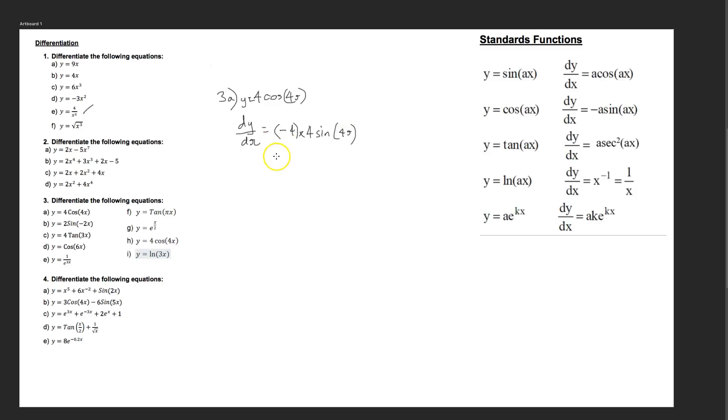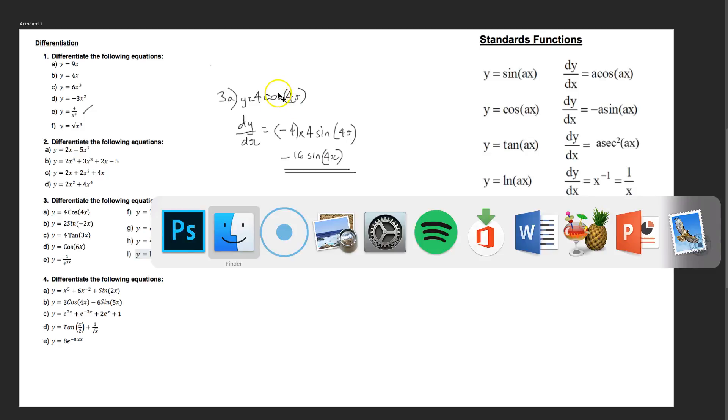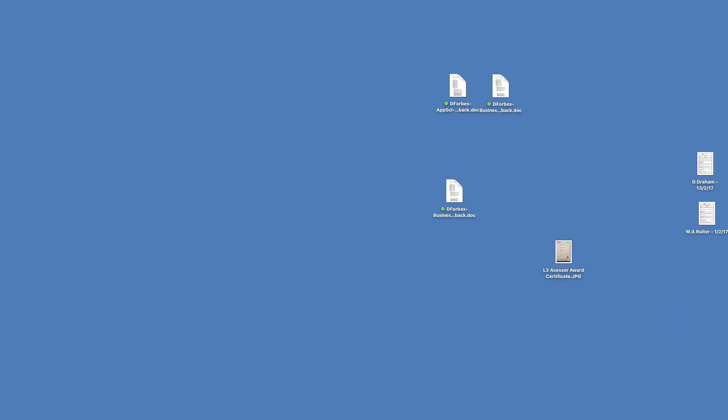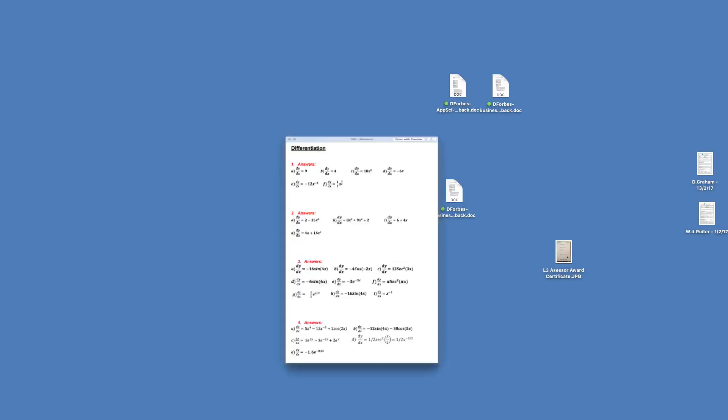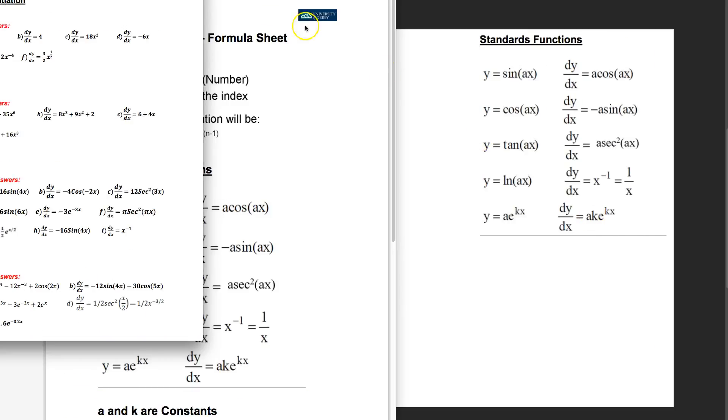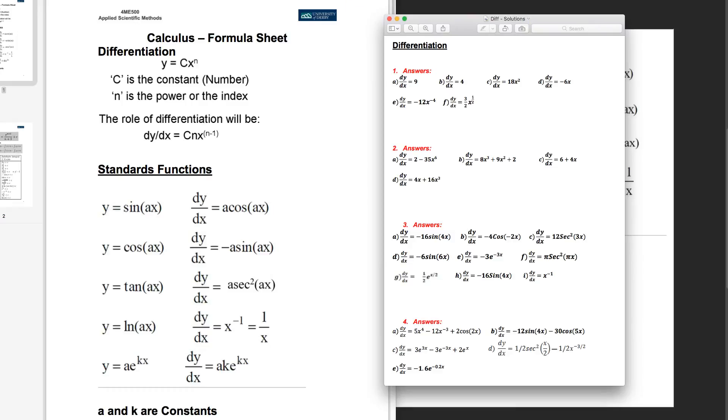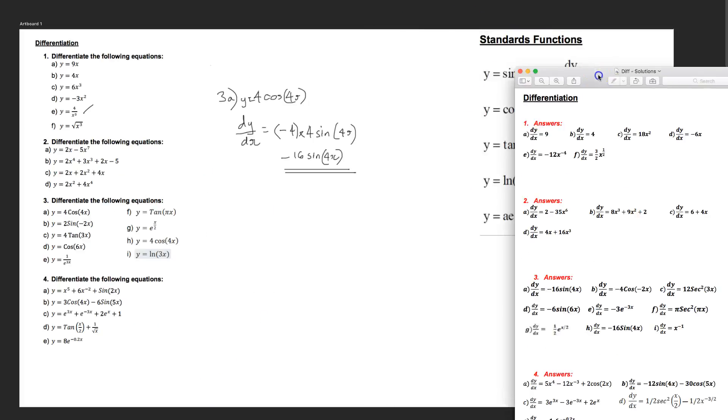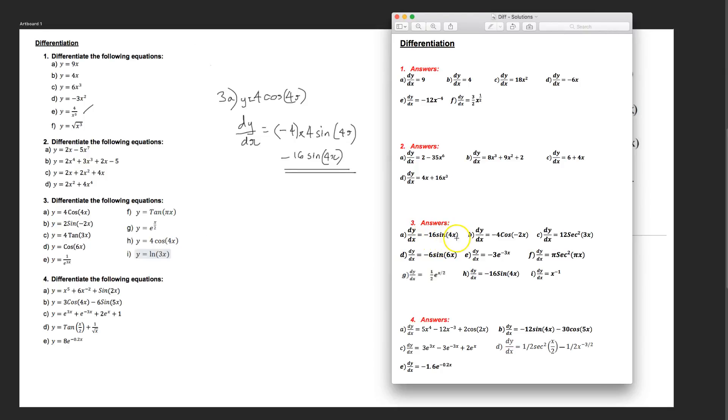If we attempt to rewrite that a bit neater, which I am struggling with tonight with my graphics tablet. We've got minus 16, minus 4 times 4, sine 4x. And that is the differential of our original function. We'll check that against our solutions. There we go. For 3a, we have minus 16 sine 4x.